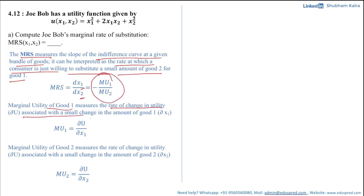Mu1 is the marginal utility of good 1, which measures the rate of change in utility associated with a small change in the amount of good 1. That is, mu1 equals the partial derivative of the utility function with respect to x1. Similarly, mu2 is the marginal utility of good 2, which is the partial derivative of u with respect to x2.